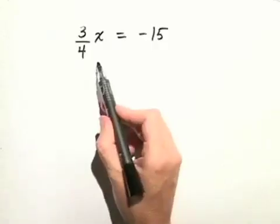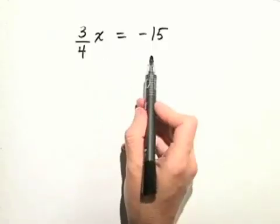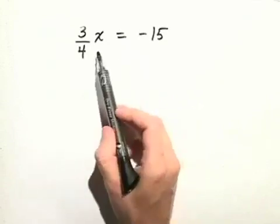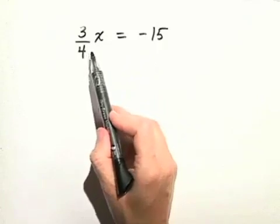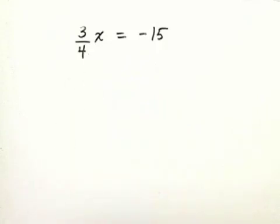Let's solve the equation 3 fourths x is equal to negative 15. Now notice there's a coefficient in front of x which happens to be a fraction. The easiest way to solve this is to multiply both sides of the equation by the reciprocal of that coefficient.